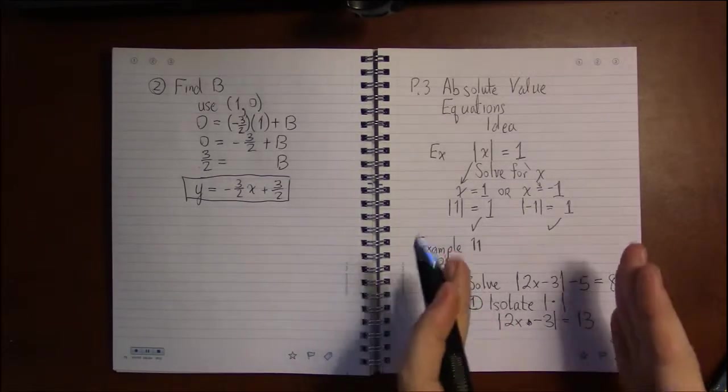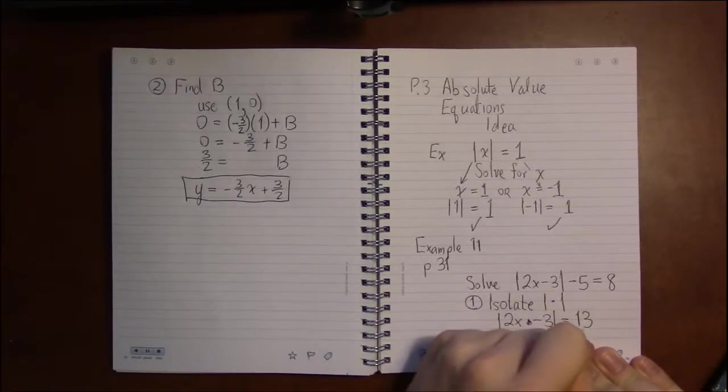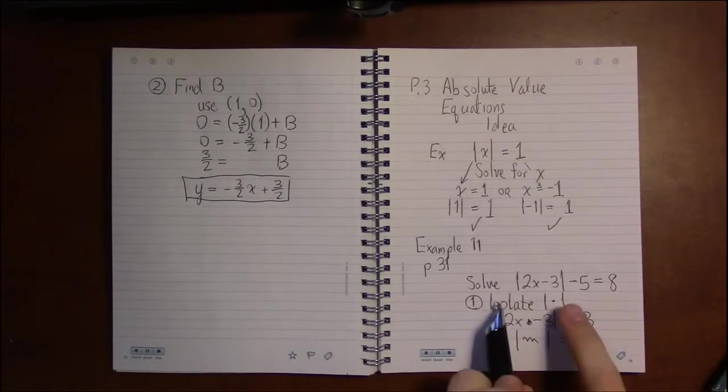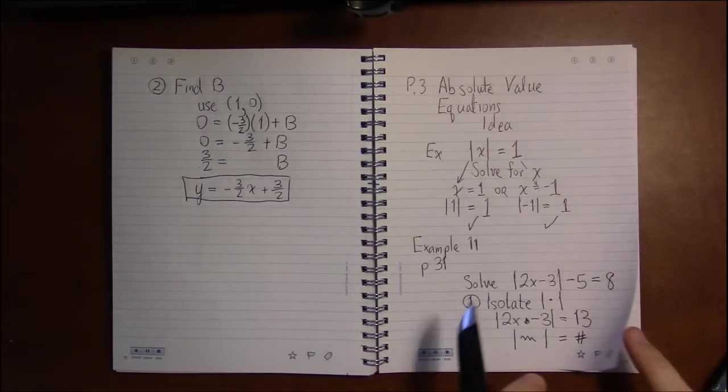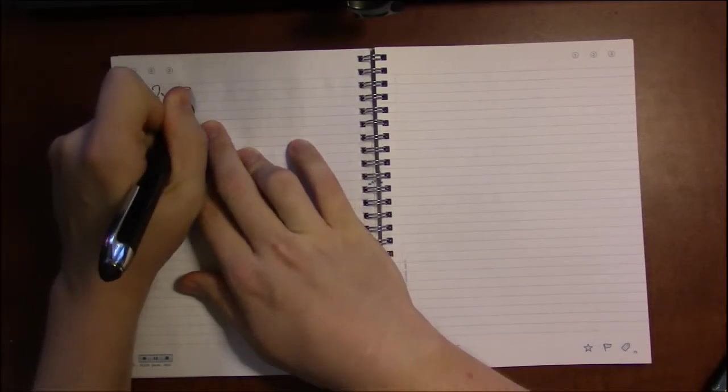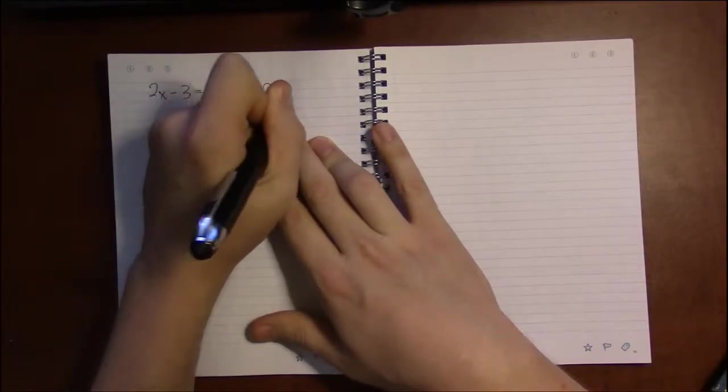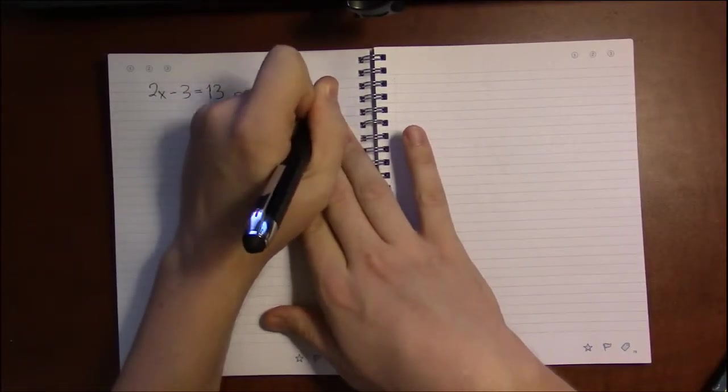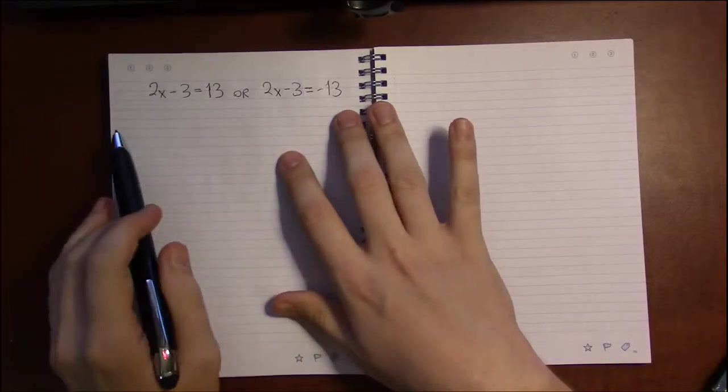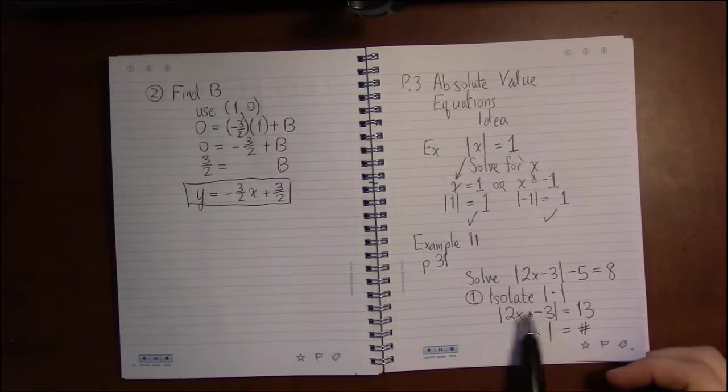Now that it's just absolute value of whatever equals a number, we can split this up. Because the only way, when you look at a number and its absolute value is 13, is if that number started out as 13, or the number inside the vertical bars was negative 13. Because when you take absolute value of negative 13, you'll get positive 13.